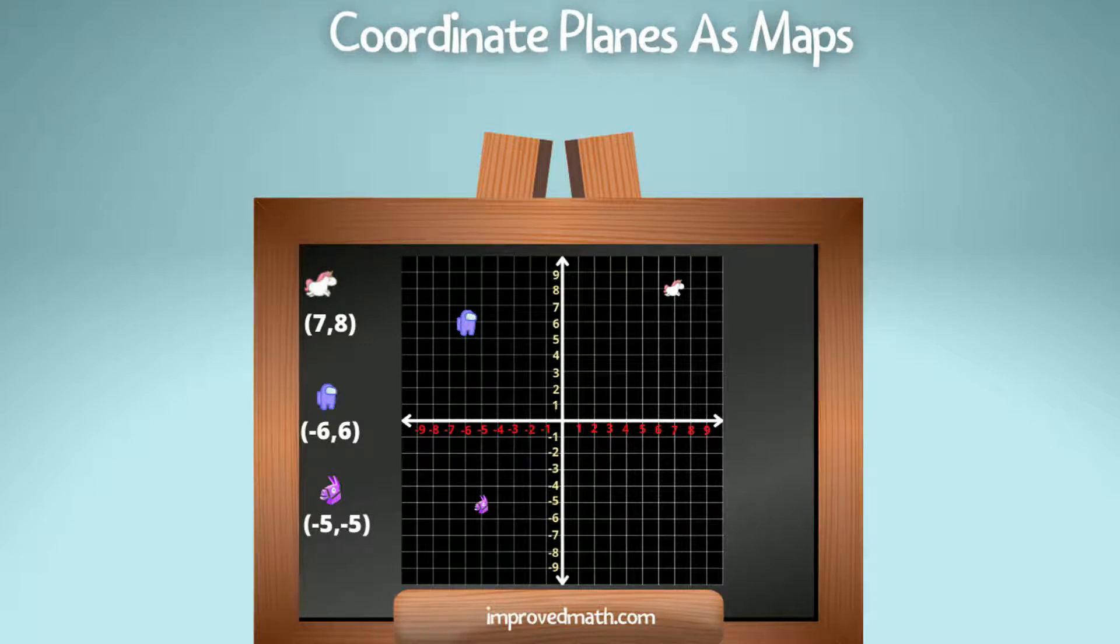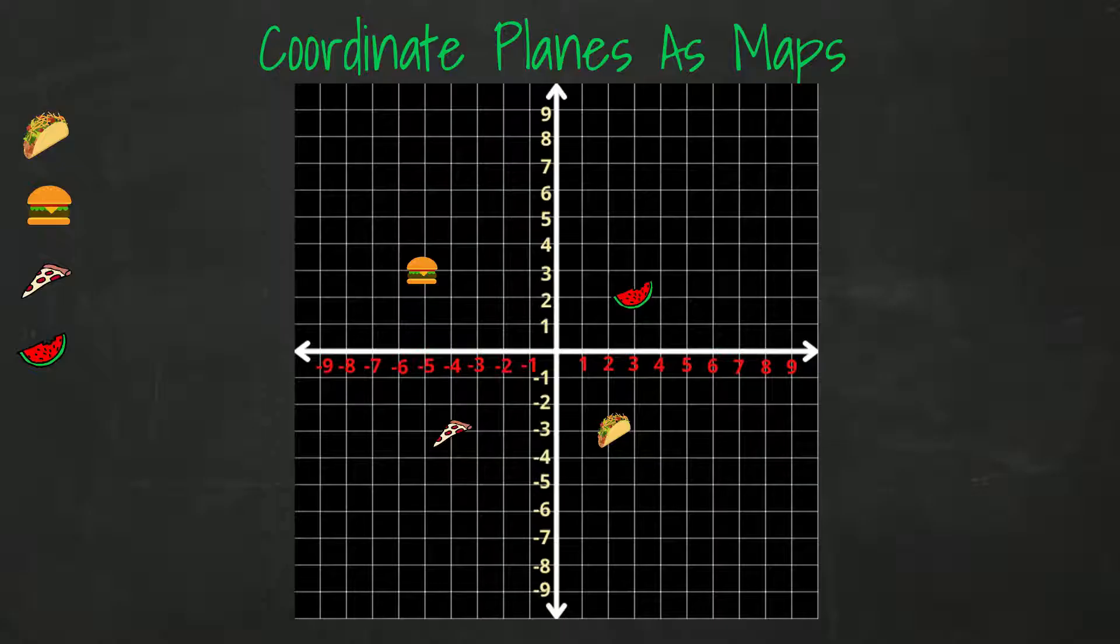Today's video is going to take a look at the coordinate plane when it's used as a map. The coordinate plane is a two-dimensional figure that can be used to plot all kinds of things, and today we're going to look at it when it's used as a map. Here you'll see a map with several of my favorite things. Let's walk through finding the coordinates of each of these items.